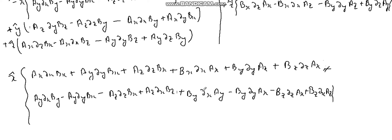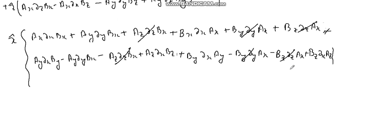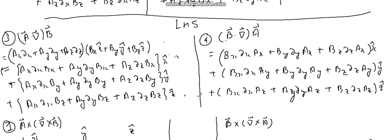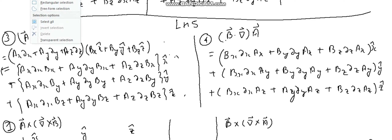Now I think some terms are going to cancel. This is a_x del_x B_x; a_z del_z B_x — is there a matching term? a_z del_x B_x — yes, this cancels out. B_y del_y a_x, b_y del_y a_x — yes. B_z del_z a_x, b_z del_z a_x — yes, this term cancels out. Now again, for the y-cap, we'll take all the y-cap terms.